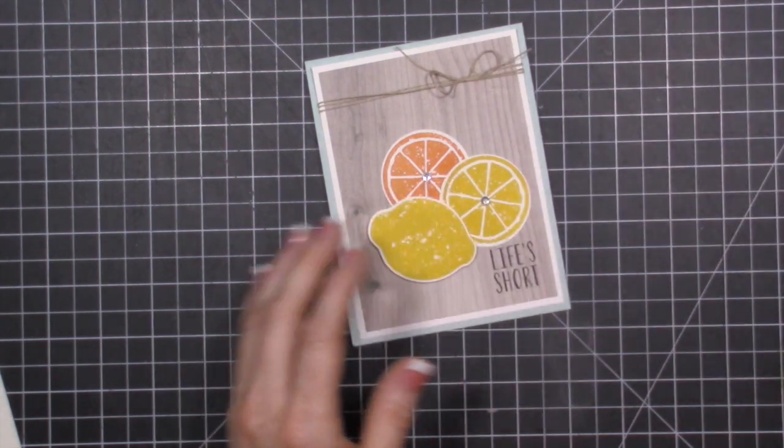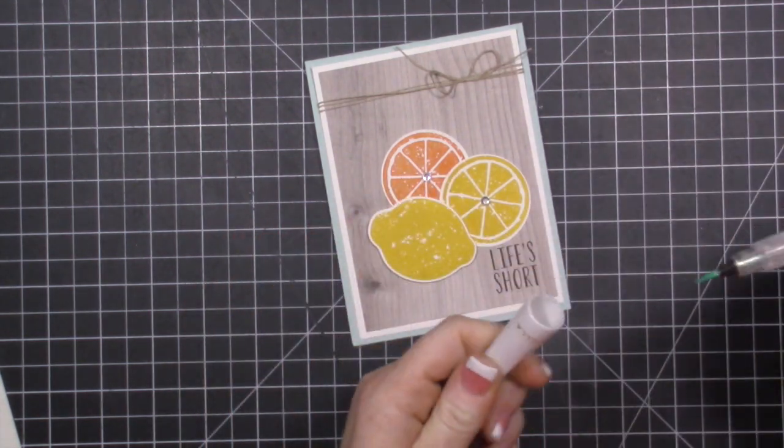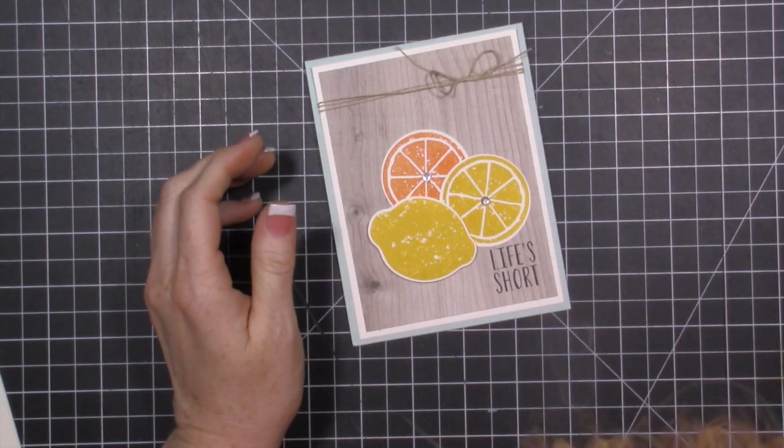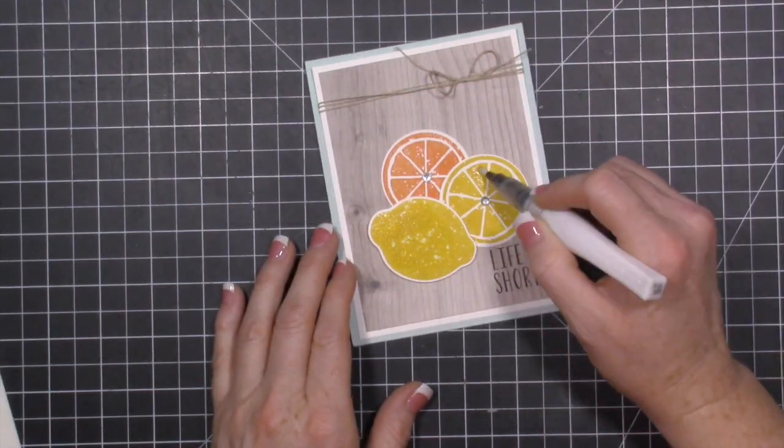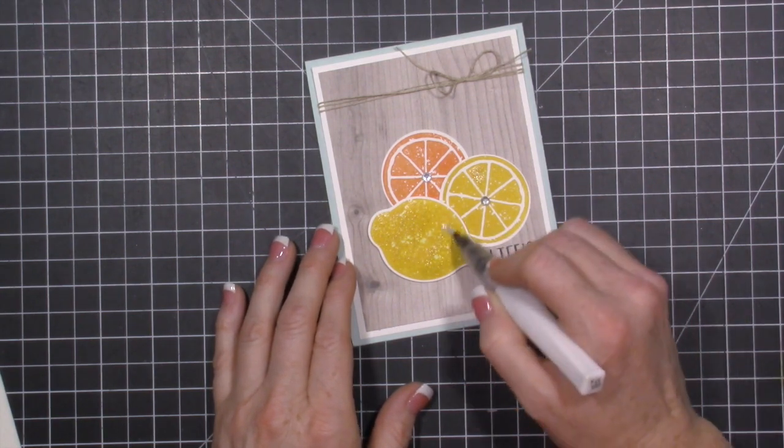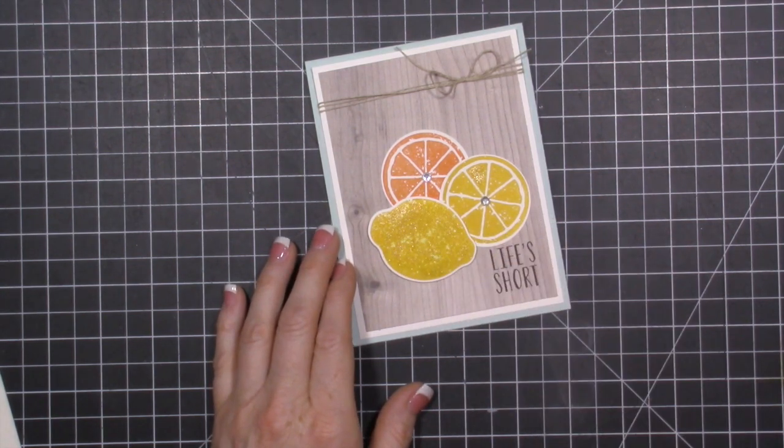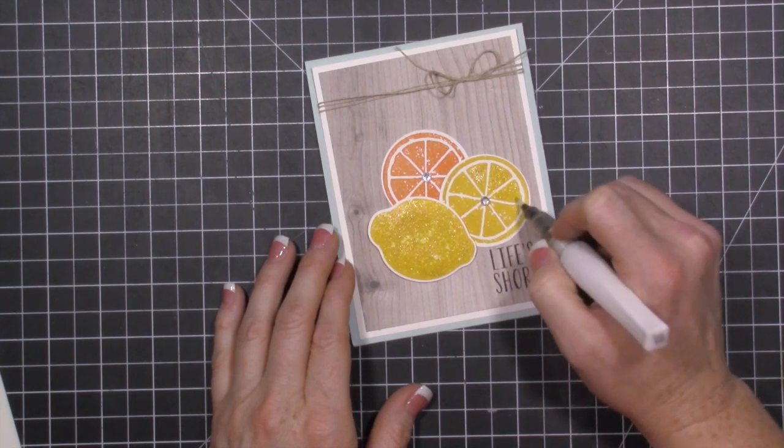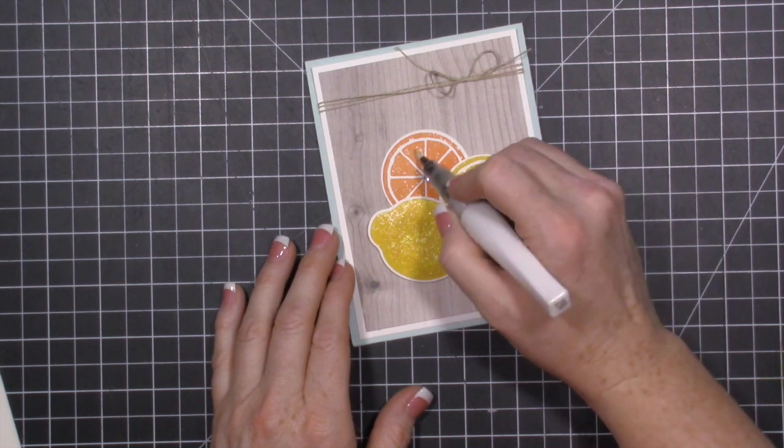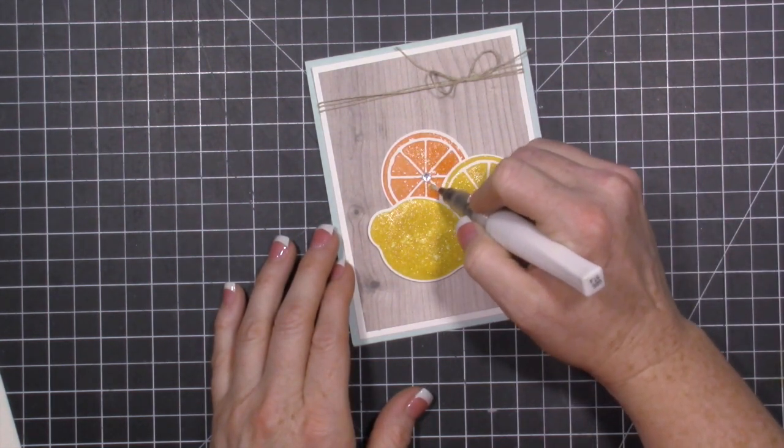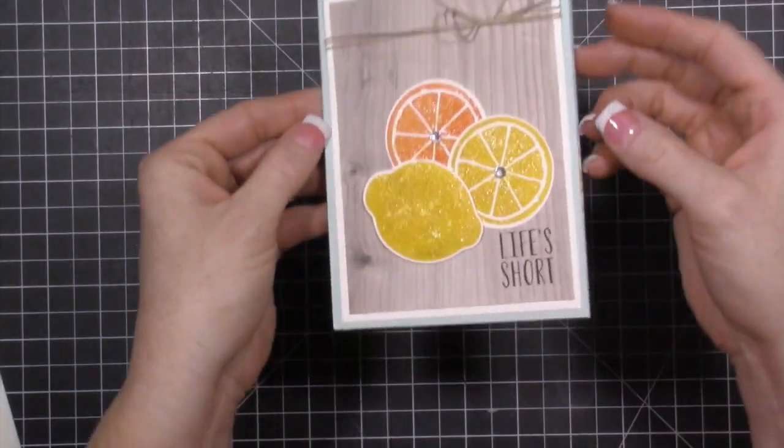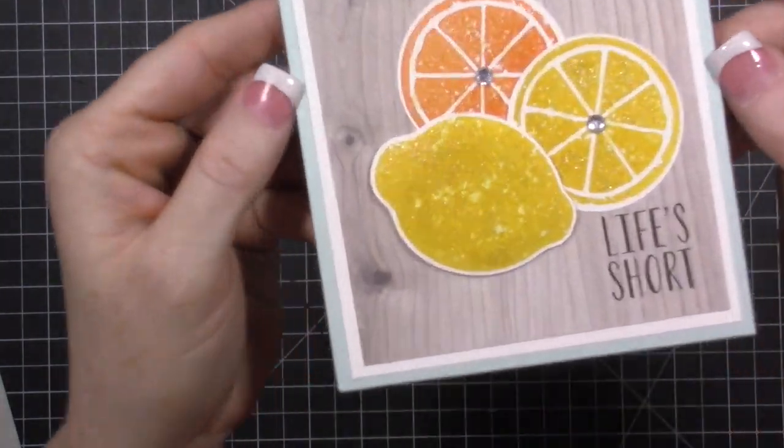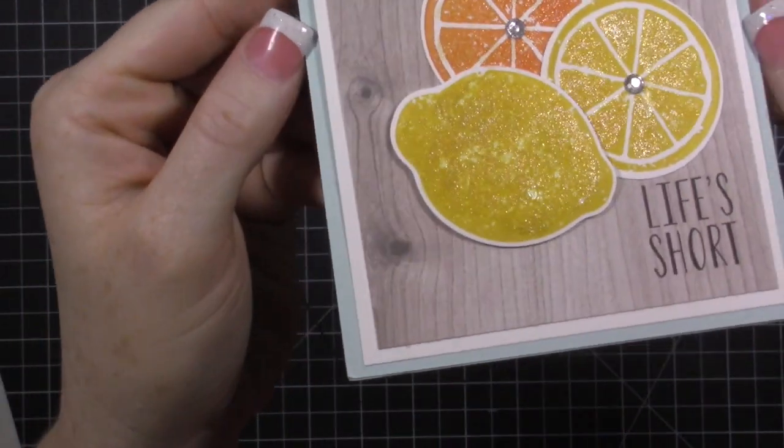The other fun thing that you can do is you can grab your Wink-a-Stella. I think that I need a new Wink-a-Stella out. And then you can see it has a little bit of shine on it and glitter. So fun. I love this card you guys.